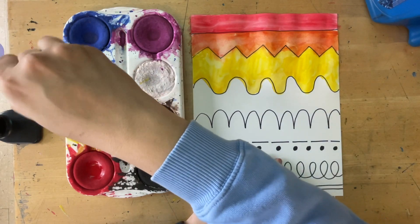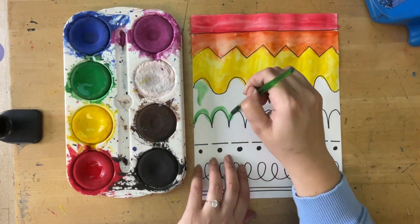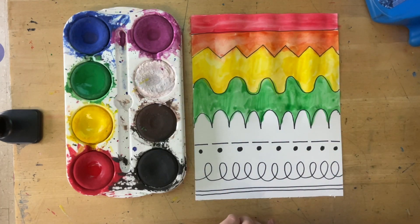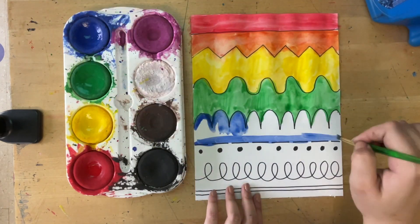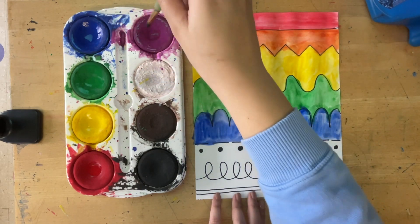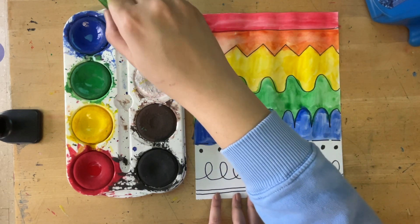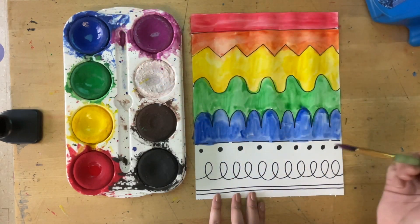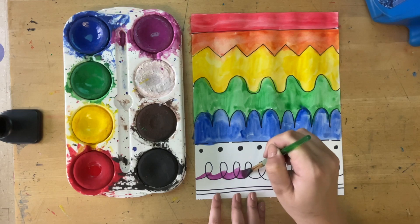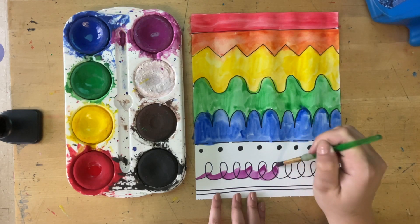ROYGBIV, next is green. You have green in your palette. Next is blue. Next is purple, and this is where I have my dotted and my loopy lines. So I'm going to just combine them together. I'm going to do my purple all the way down to the bottom of my loopy line and cover it right up.